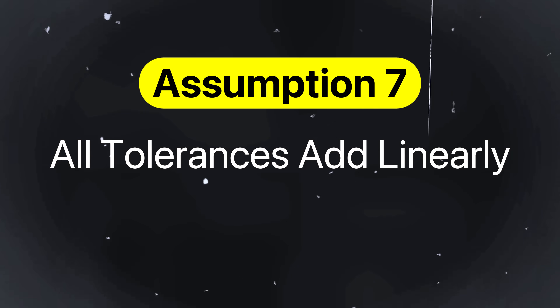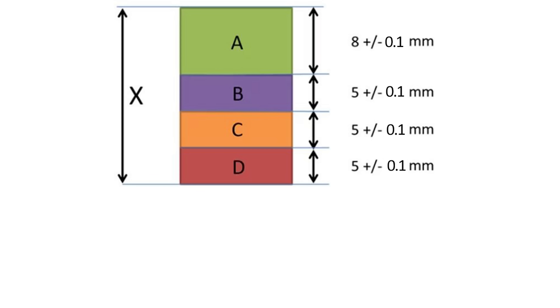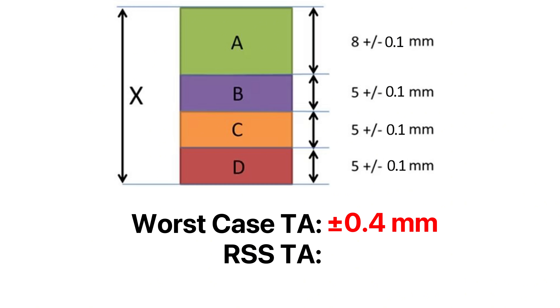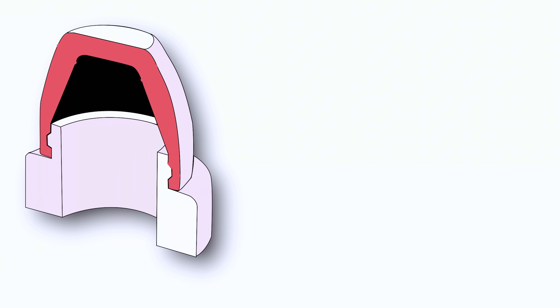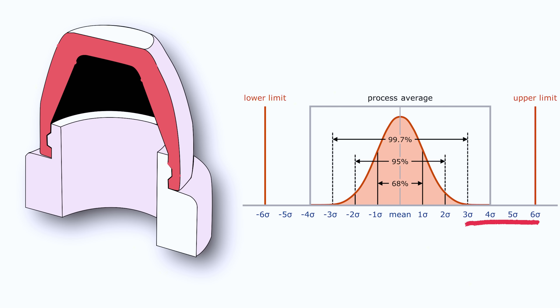Assumption number seven is all tolerances add linearly. Mechanical engineers often stack tolerances as a simple sum, which increases manufacturing costs. But in reality, tolerances combine statistically when parts are mass produced. For example, in a four-piece stack of parts with a ±0.1 mm tolerance, worst-case linear addition gives a 0.4 mm stack-up. But statistical methods like root sum square may yield a tighter expected range around 0.2 mm. Using the wrong method can make you over-design or under-predict risk. Worst case might be more suitable for low-volume production where failure is unacceptable, while root sum square is better for high-volume products like consumer electronics where statistical process control is in place.